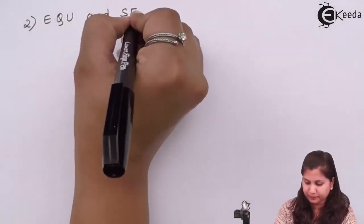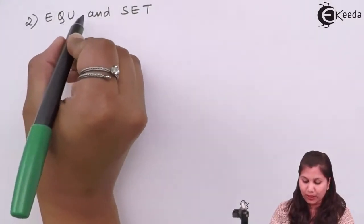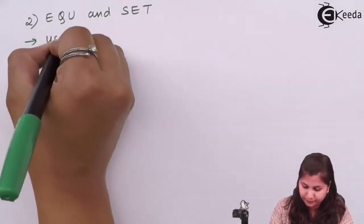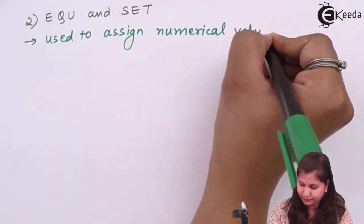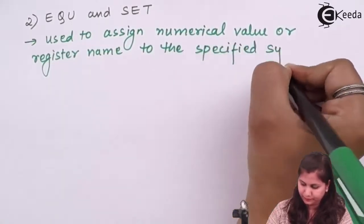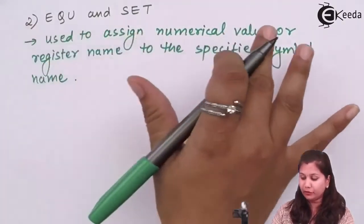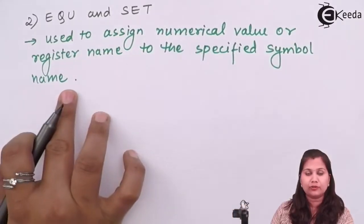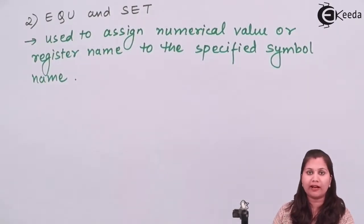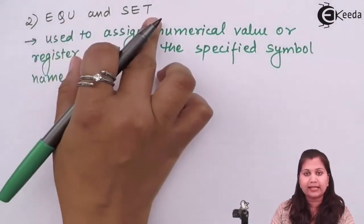The next assembler directives are EQU and SET. These are used to assign a numerical value or a register name to a specified symbol name. Suppose in the program we are using some symbols — to define those symbols we assign either a numerical value or a register name to that symbol, so that we can use that symbol throughout the whole program.